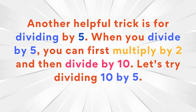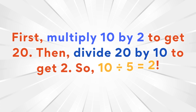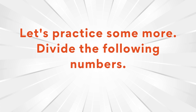Another helpful trick is for dividing by five. When you divide by five, you can first multiply by two and then divide by ten. Let's try dividing ten by five: first multiply ten by two to get twenty, then divide twenty by ten to get two. So ten divided by five equals two.